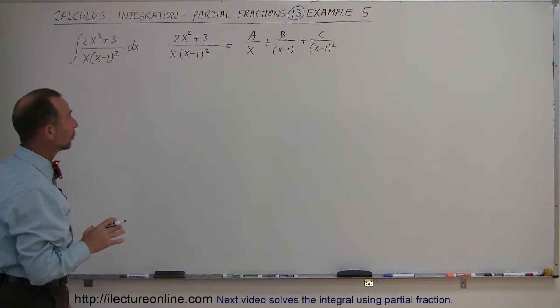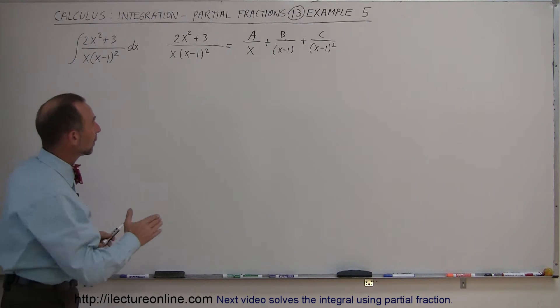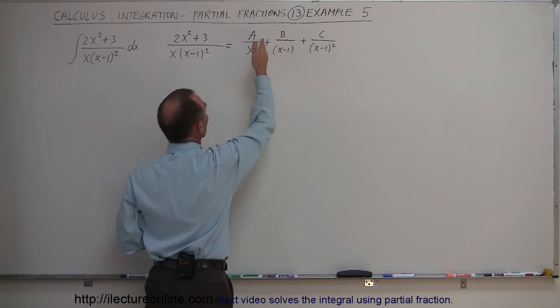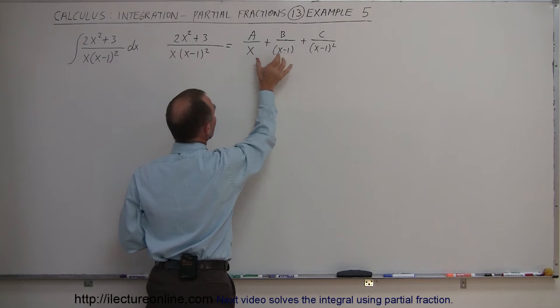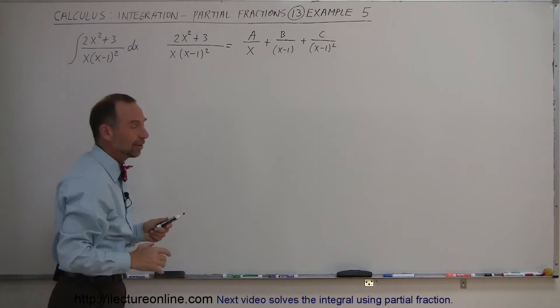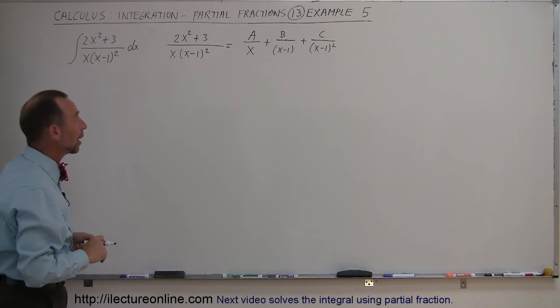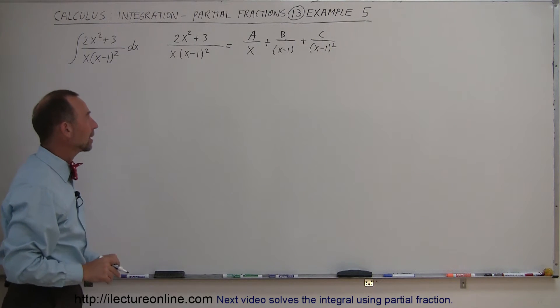Alright, so what we're going to do now is we're going to multiply each of the fractions by a factor both the numerator and the denominator to make the denominator look exactly like the denominator over here. In other words, find the common denominator for each fraction that equals this denominator right here.